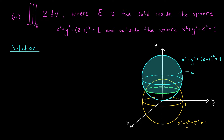Now that we've identified our solid, we have to decide on a coordinate system. Given that we're working with spheres here, spherical coordinates would be a good choice. We need to describe our solid E in terms of the three spherical coordinate variables: rho, phi, and theta. Rho represents the distance from points within our solid to the origin. As we move from the origin through the solid E, we don't actually enter the solid until we move beyond the yellow sphere. The yellow sphere gives us our lower bound on rho, and the blue sphere gives us the upper bound on rho.